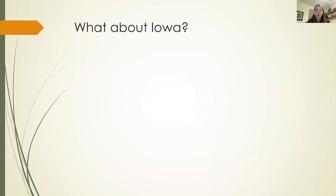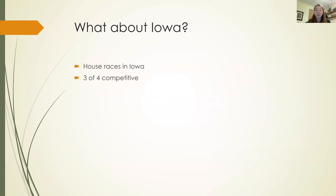Now let's talk about Iowa, because Iowa is a swing state — not only in presidential elections, but we tend to have competitive congressional elections, and most states do not have that. This is a really important feature of Iowa. Looking at the House races in Iowa, we have four House seats and three of the four are competitive. Remember, there are only a small number of competitive House seats across the nation, and we have three of those.